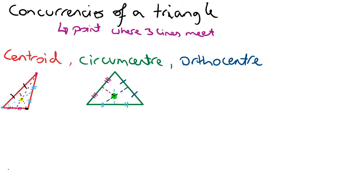It's worth noting that the circumcentre of a triangle is the centre of a circle which touches each of the three vertices, and the distance between the circumcentre and the vertices is the radius.